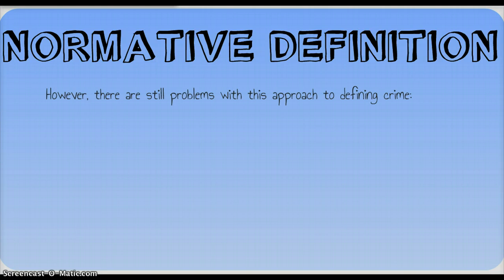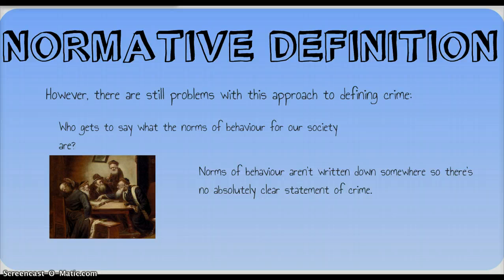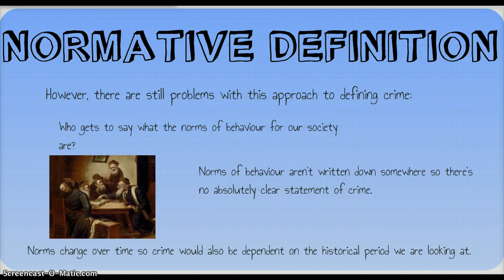Normative definitions do have weaknesses though. We know who gets to write the law under a legislative definition, but under a normative definition, who gets to say what the norms of behaviour are for our society? Norms aren't written down anywhere; there's no code or law book to look them up in, so there's no absolutely clear statement of crime. And just as laws change over time, norms do too, but they're harder to keep track of — so norms would also dictate a historically changing concept of crime.